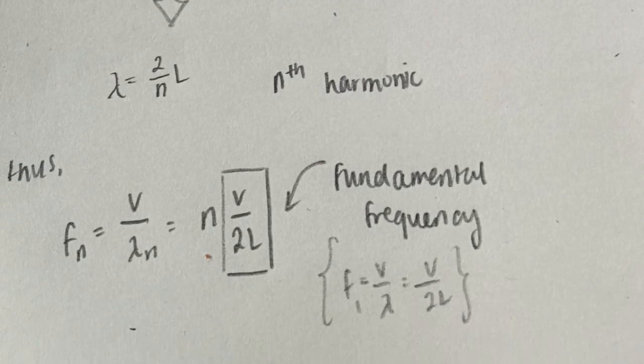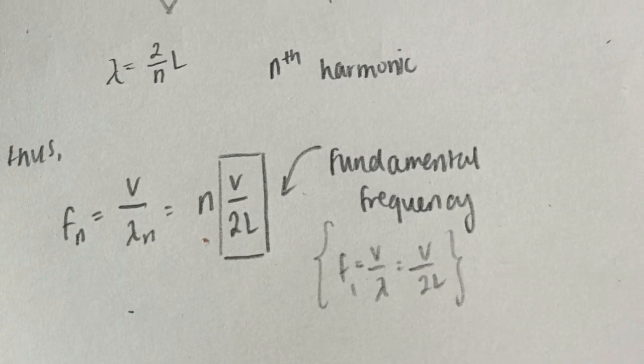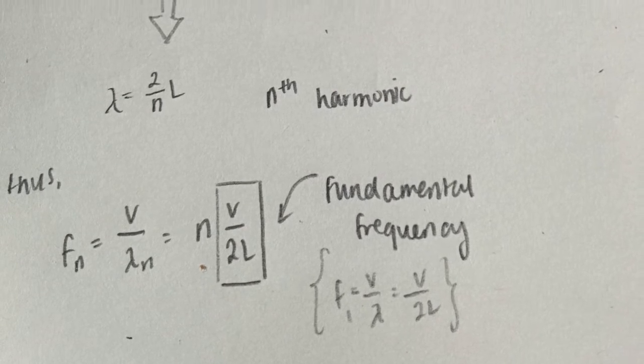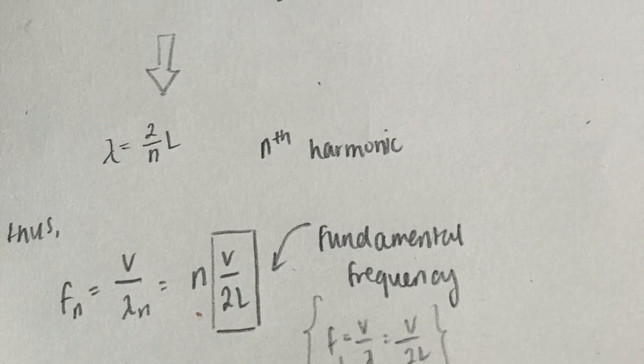Since frequency is equal to velocity over wavelength, we can find that the frequency of the nth harmonic is equal to n times velocity all over 2L, which is the same as n times the fundamental frequency.